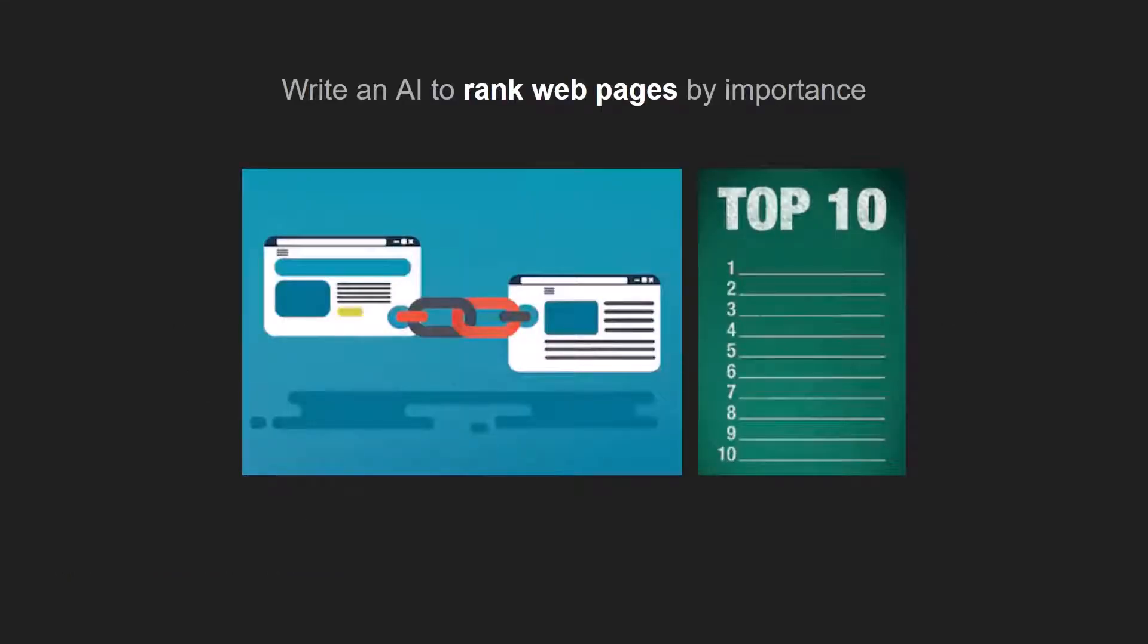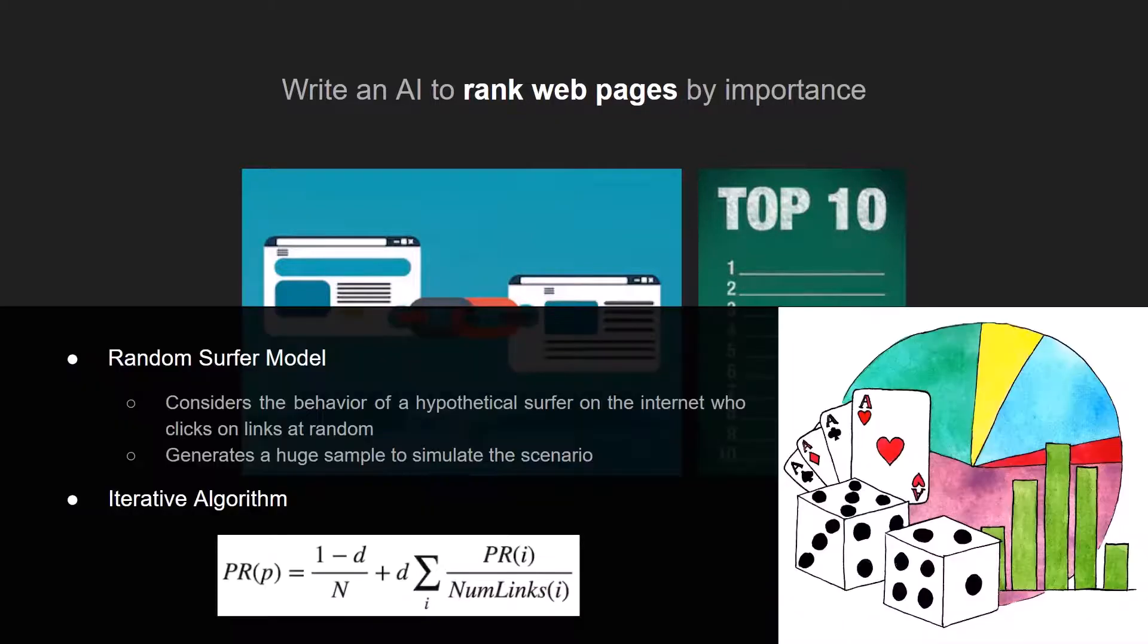So the assignment was to write an artificial intelligence to rank web pages by importance. As we may know, there are links between web pages and depending on those links we can define the probability of being in a specific web page. So in that way we can define a kind of top ranked web pages, and it depends on the probability of being in that web page.